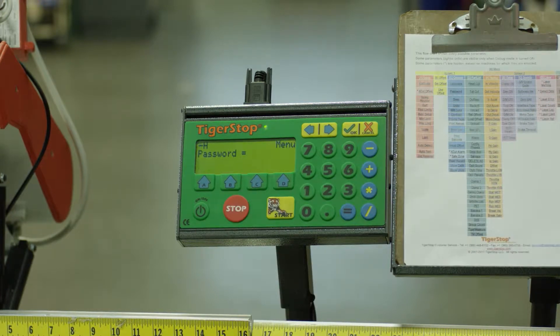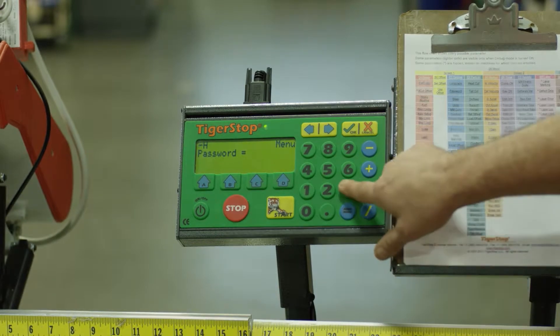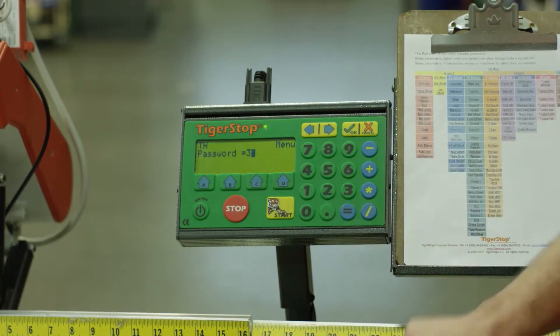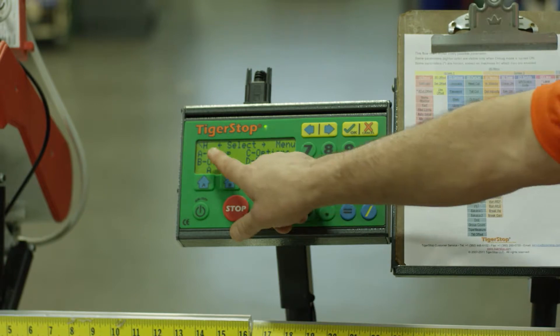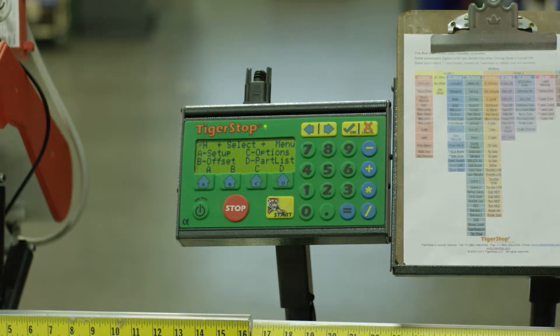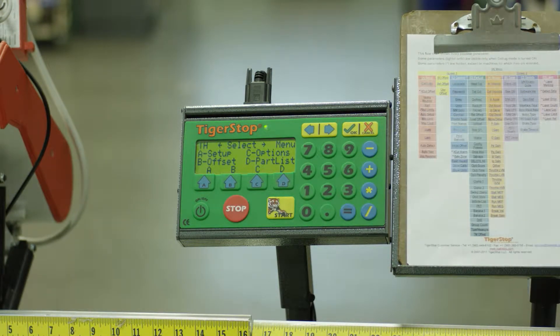When you've pressed menu, it will now ask you for the password. Your password is your serial number unless it has been changed. In this video, we're going to go ahead and use three. I'm going to enter my password, press OK and now you will see we are on screen one.